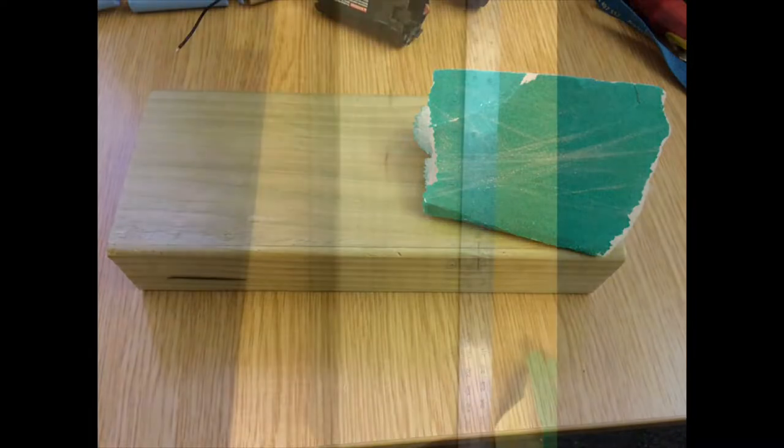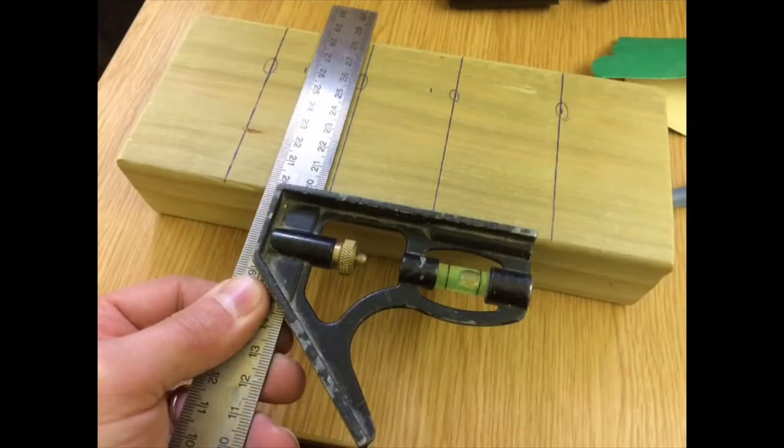Next I'll measure the length of it and divide it by the amount of screwdrivers that I want to fit, and I then square it off and draw my lines for the other side because I'm going to be fitting two rows of screwdrivers into this holder.